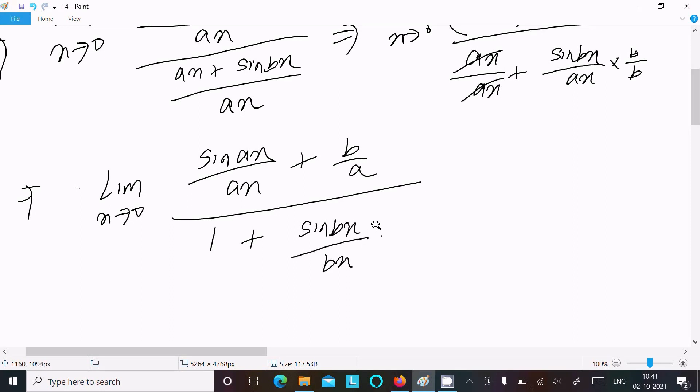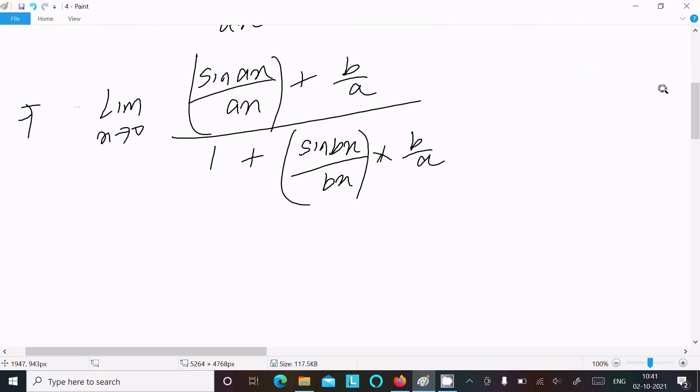...over bx, and the other term gives us b/a. Now we use the standard formula: lim as x→0 of sin(x)/x = 1.